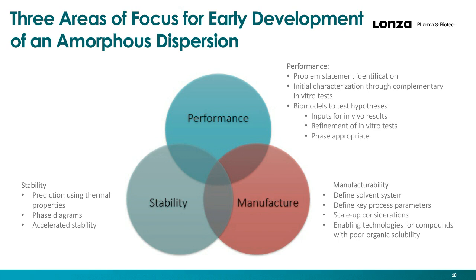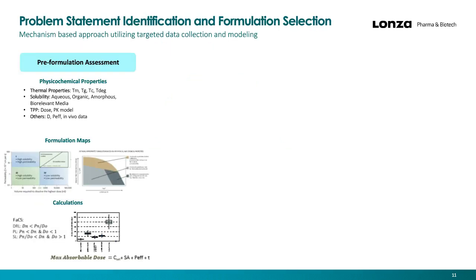We do have enabling technologies for compounds with poor organic solubility, which I'll touch on in the case studies. Performance may not be readily apparent and requires some investigation, which is the bulk of what we do in early phase development. This next slide will take you through how we do problem statement identification and formulation selection here at Lonza Bend.